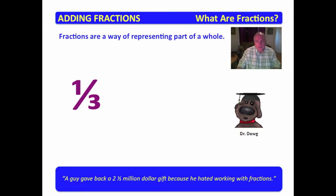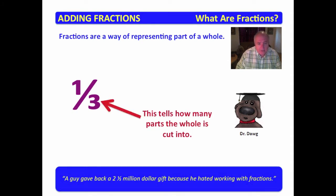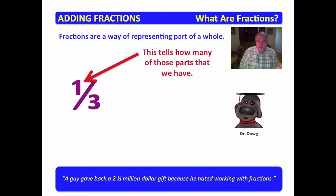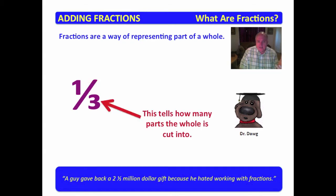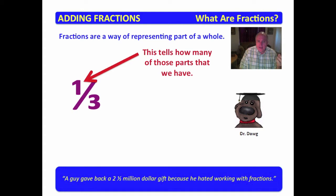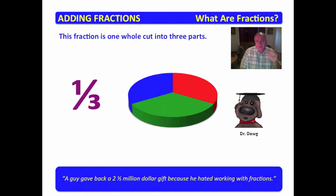Fractions are a way of representing part of a whole. You can read this several ways — it can be read as one over three, or one-third. Just like the number one is a symbol, the number one over three means things to mathematicians. The number three, which is on the bottom, tells how many parts the whole is cut into — in this case, three parts. The top number tells how many of those parts we have. It's cut into three parts and we have one of those parts.